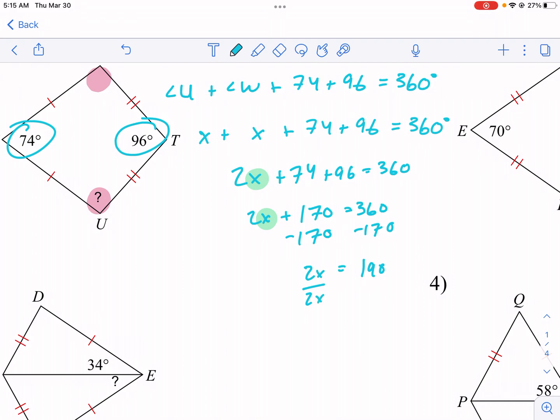And then I'm going to subtract that from 360 minus 170 from each side. Again, I'm trying to get the x by itself. And I get 190 equals 2x. And my final step is to undo the times 2 by dividing by 2 to both sides. So I have 190 divided by 2, and that will give me 95. So x equals 95 degrees.